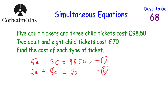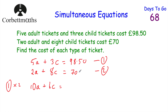So we've got our simultaneous equations — we just need to solve them. You could cancel the A's or the C's. You could double the top equation and multiply the bottom by 5 to get 10A and 10A. Or multiply the top by 8 and the bottom by 3 to get 24C and 24C. I'm going to cancel the A's this time. I'll multiply equation 1 by 2 to get 10A, and multiply equation 2 by 5 to get 10A as well.